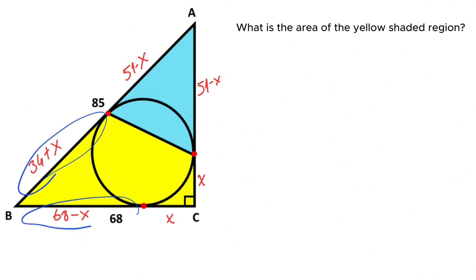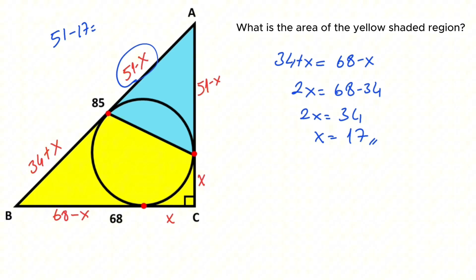We know that according to the two tangent theorem, these two parts must be equal to each other. So 34 plus x must equal 68 minus x. That means 2x equals 68 minus 34, so 2x equals 34, that means x is going to be 17. Therefore this length must equal 51 minus 17, so 34. That's right, here 34. So this length is also 34.